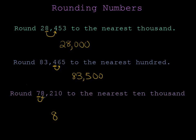All these remaining digits must be replaced with zeros so that my rounded number is 80,000. If I didn't have these zeros, my rounded number would only be 8 and that is way too small. So I need these zeros to hold the place value.